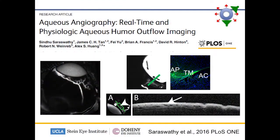In aqueous angiography, we're introducing tracers into the front of the eye, similar to how retina doctors put the same tracers — fluorescein and ICG — into the vein to look at retinal blood flow. But instead, we're looking at aqueous humor outflow. What you're seeing here on your left is an image of an eye where there are perilimbal segmental regions of flow, but on the right there aren't. Using techniques like histology and OCT, we validate the signal as actually being outflow.